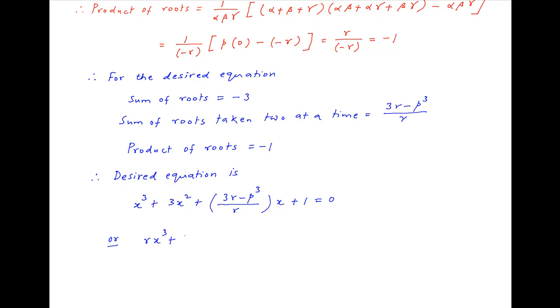Multiplying through by r, the desired equation is r·x³ + 3r·x² + (3r - p³)·x + r = 0.